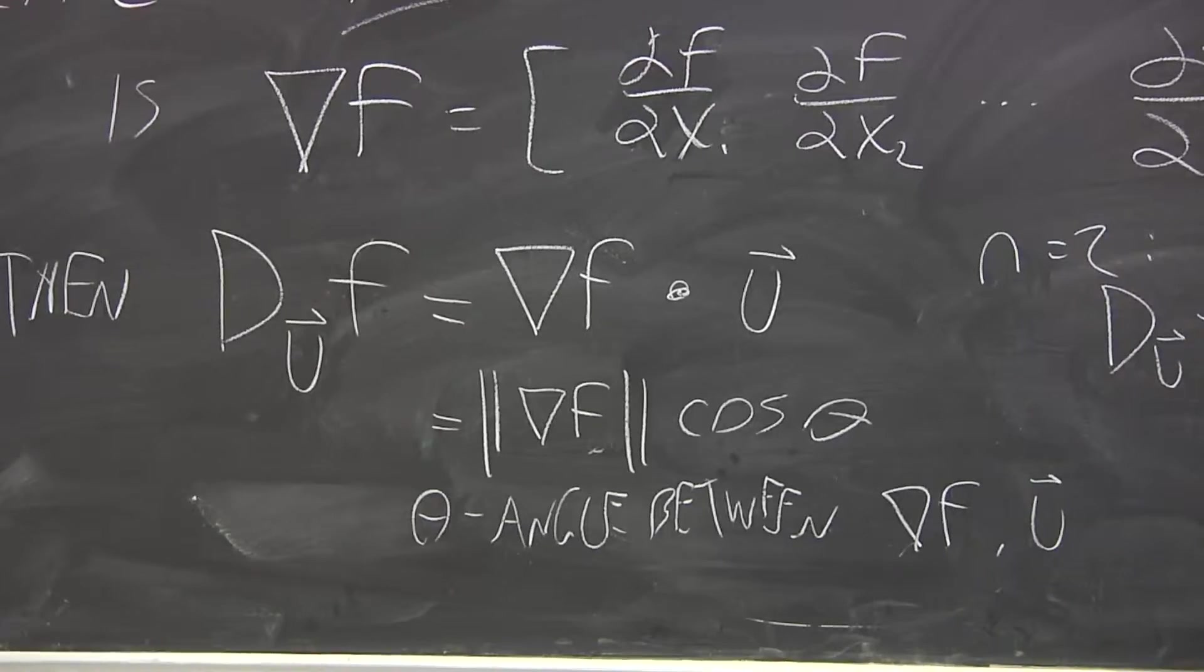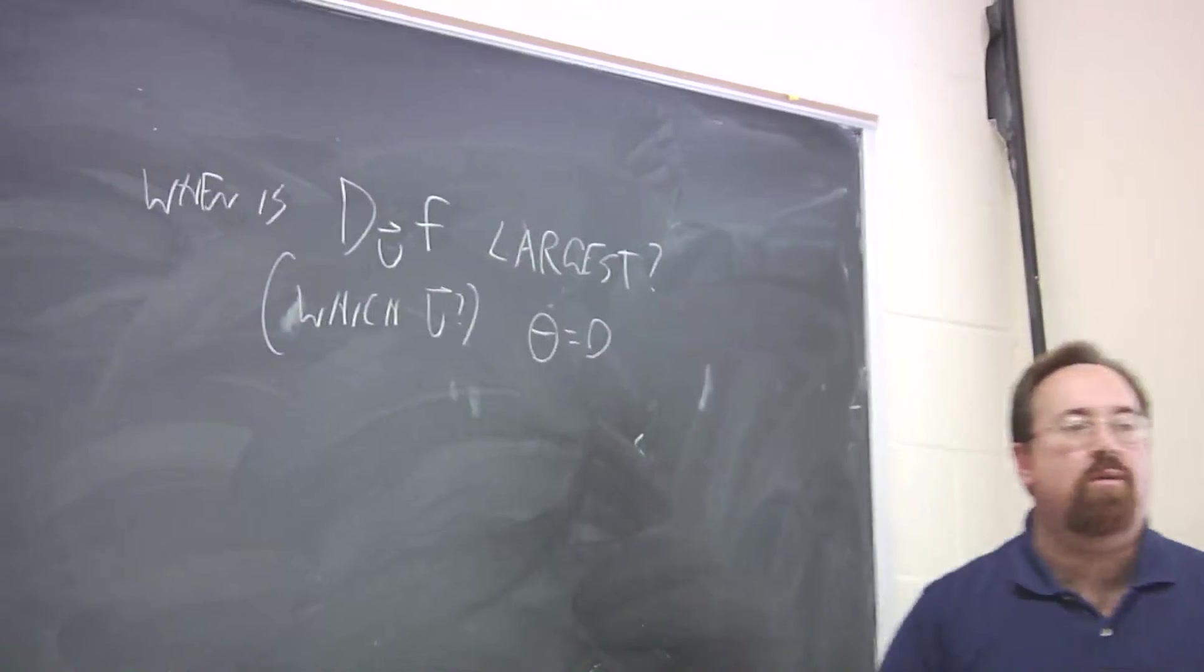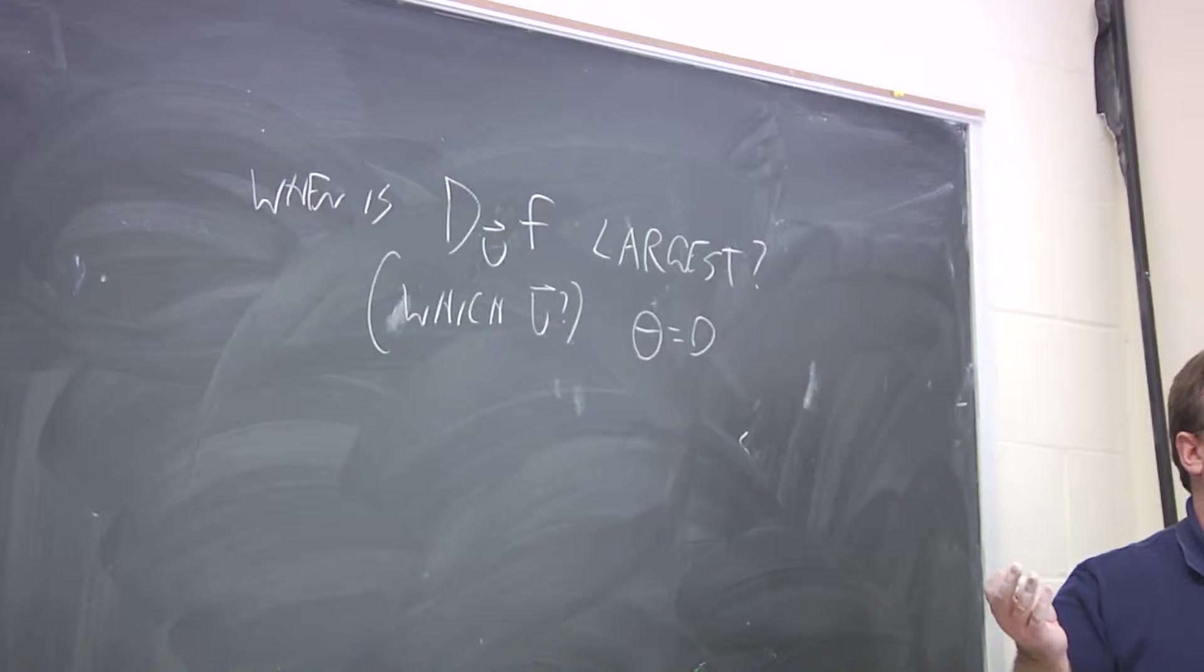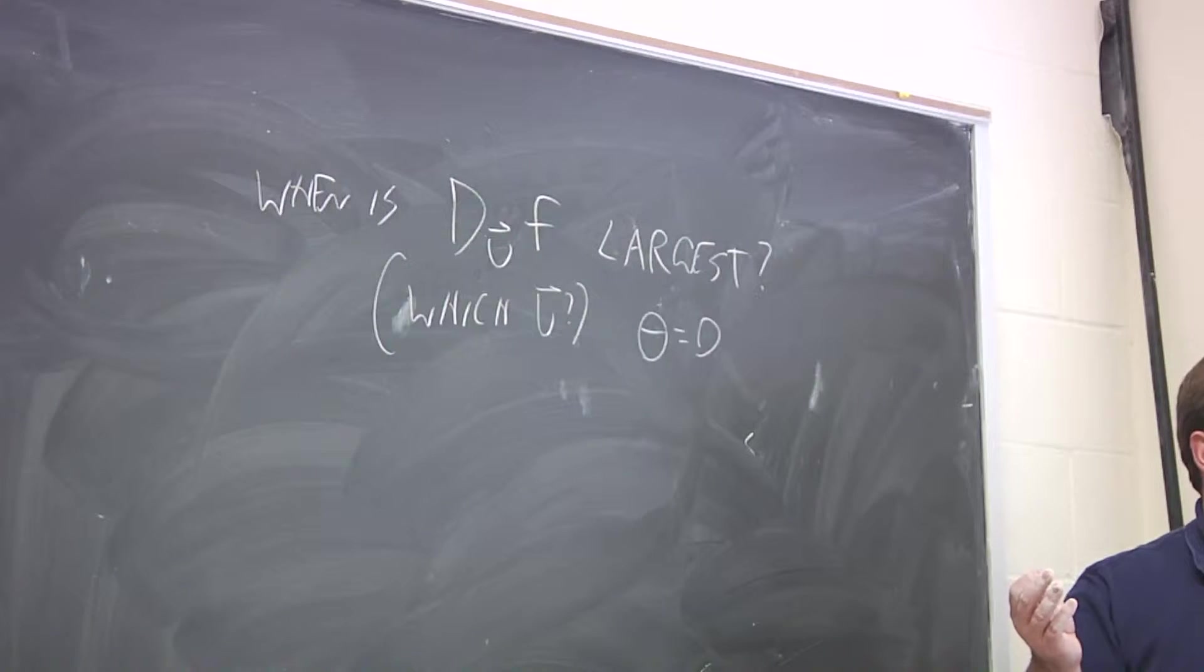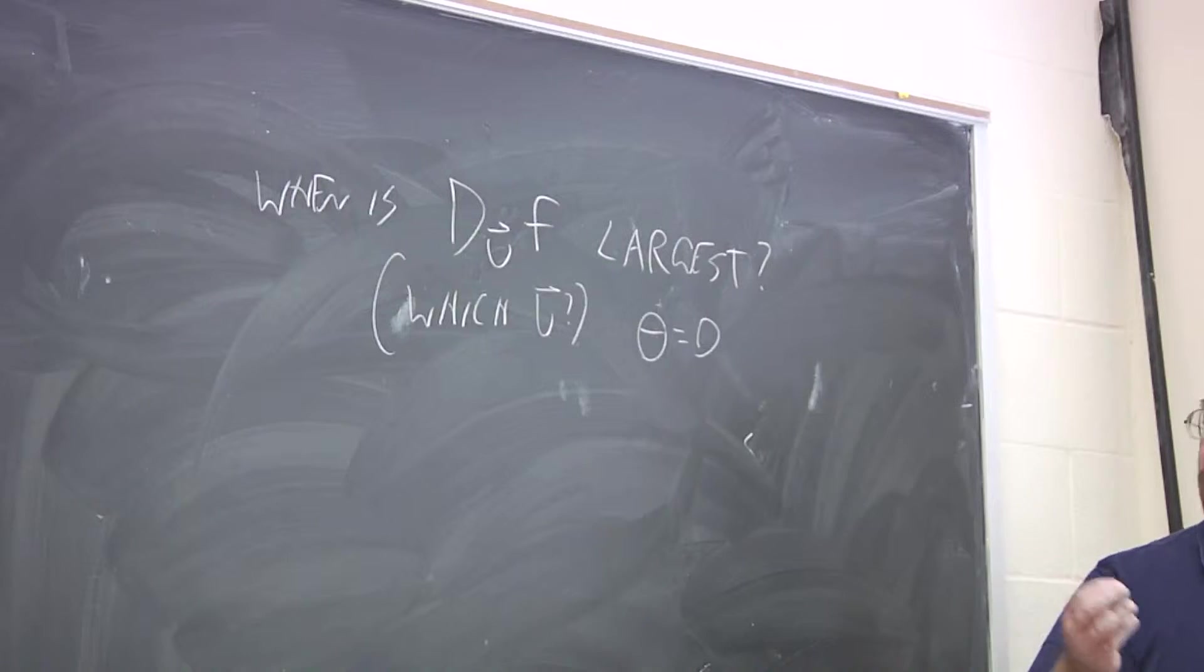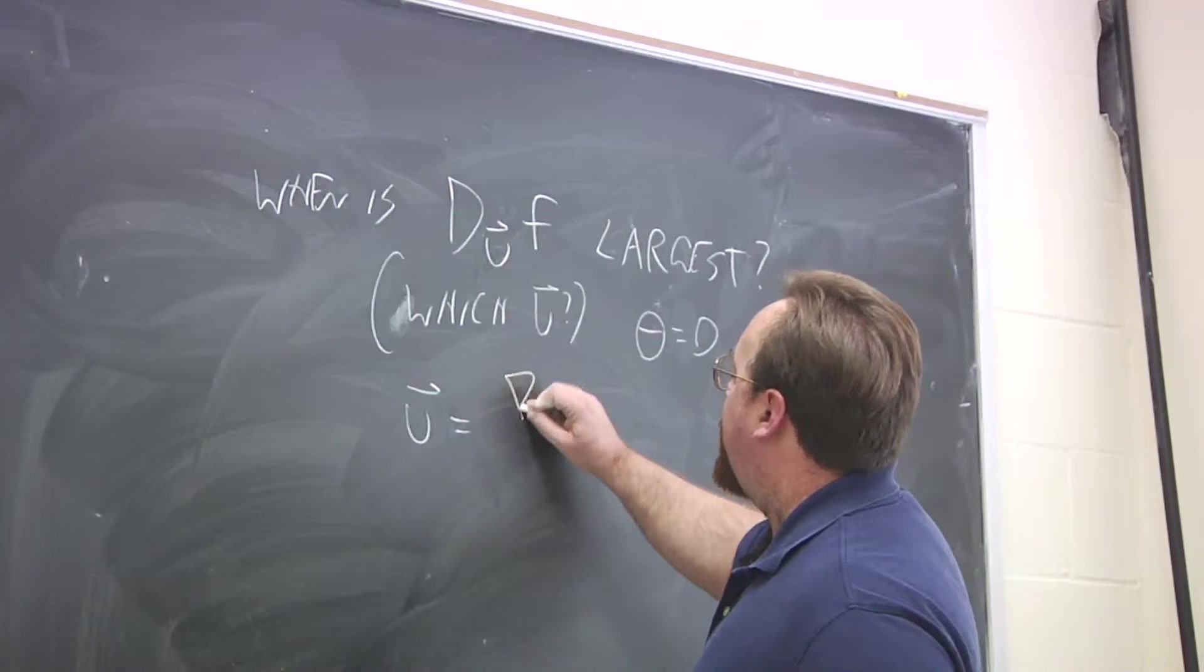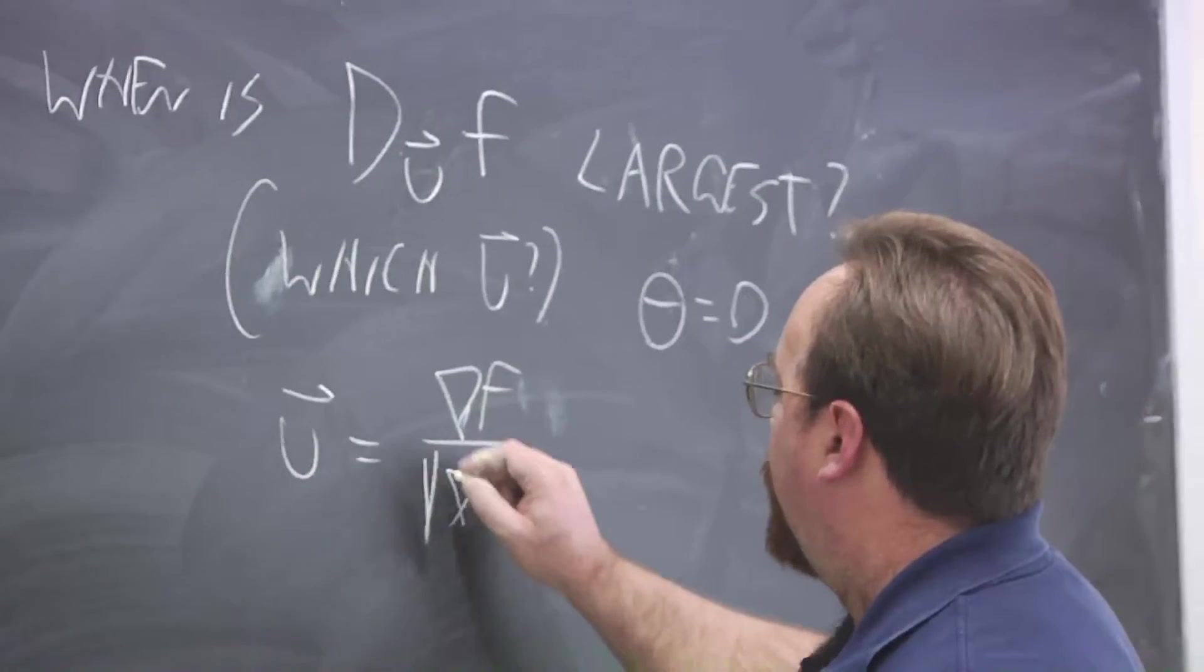Yeah, that's what you were saying. Cosine is one. So, theta is equal to zero. So, geometrically, what does that say about u? How does that? It's in the same direction. What? It's in the same direction. Oh, yeah, same direction. So, u, since it has to be a unit vector, must be the gradient of f over its magnitude.